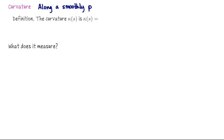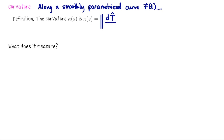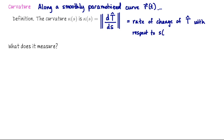Along some smoothly parametrized curve r of t, the curvature — which we use the Greek letter kappa for — is defined to be the magnitude of the rate of change of t-hat with respect to, not time, but arc length. To see why this definition makes sense, let's look at what this definition would measure.